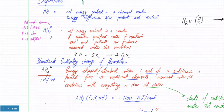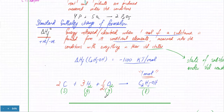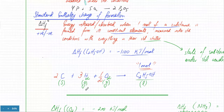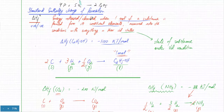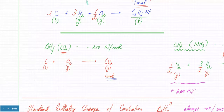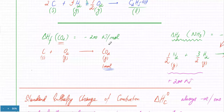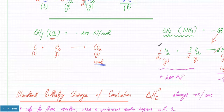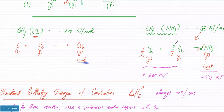Then we talked about enthalpy of formation, which is when one mole of any substance is formed from its constituent elements, and those elements should be in their standard state. The energy released or absorbed could be endo or exo. Whenever one mole of a substance is formed from its elements — like NH3 being formed from nitrogen and hydrogen — that is called the enthalpy change of formation.